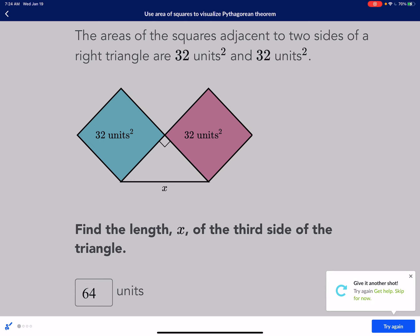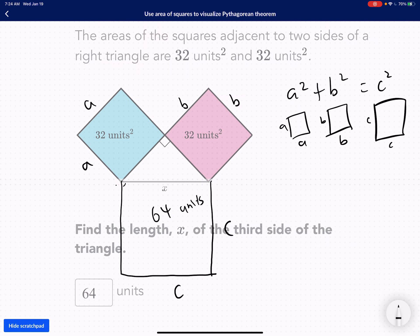Oh, what? It's not it. Okay. So here's the thing. See, they're not asking for the area, they're asking for the length. What they did was give me the area, 32 plus 32 is 64, because of the definition of Pythagorean theorem.